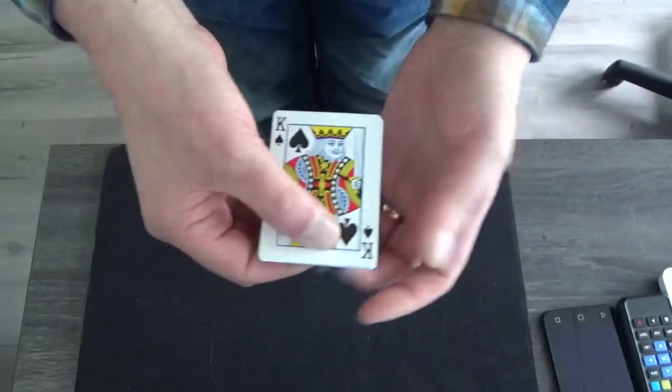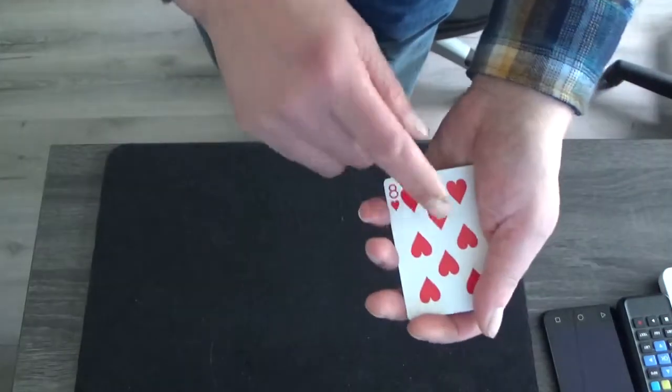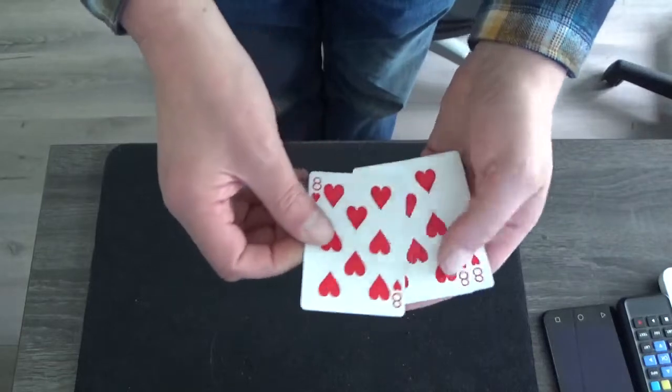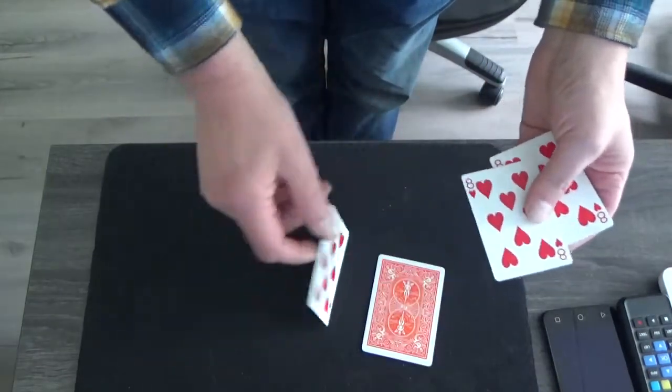So now we have the four kings, and maybe you ask where are the eights. Well, the eights are on the other side.